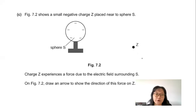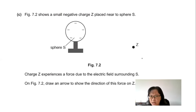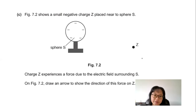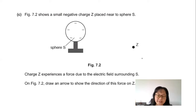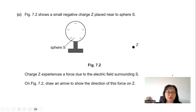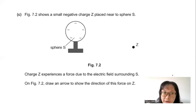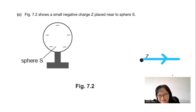Part C: Figure 7.2 shows a small negative charge Z placed near sphere S. Draw an arrow to show the direction of the force acting on charge Z. Since charge Z is negatively charged and sphere S is also negatively charged, like charges repel. So the force on Z is directed away from sphere S.